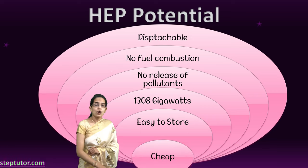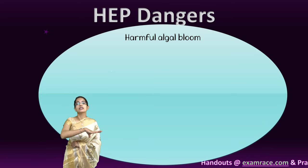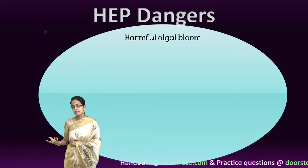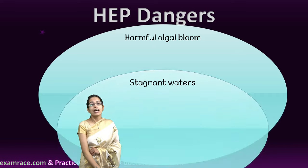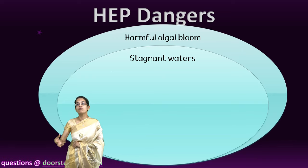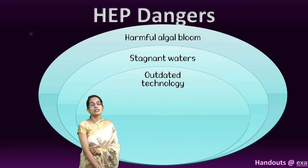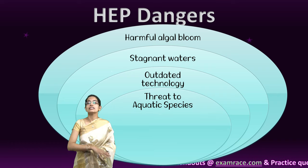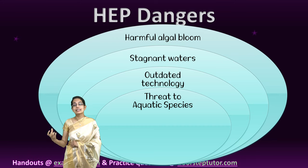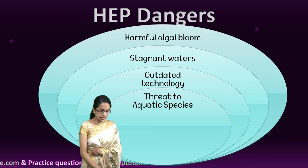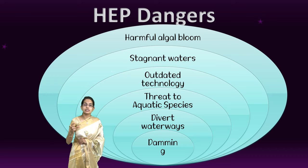Now let's look at the gloomy side of the picture. With hydroelectric power stations, we are damming the water. This damming brings in stagnant water, and as soon as water gets stagnant, there is harmful algal bloom that could be highly toxic for human beings. Sometimes the traditional methods through which HEP projects are being built are outdated, and a lot of the infrastructure is a threat to the marine aquatic ecosystem. Diversion of waterways also takes place.